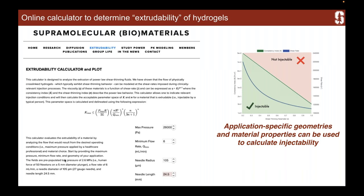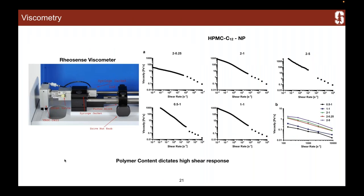Once we realized that this high-shear data was really key to designing our materials, that's when we found out about RayoSense. We got an M-VROC viscometer in our lab, and I did a series of measurements with different HPMC-C12 nanoparticle PNP hydrogels. We reinforced what Hector saw — really the polymer content is what dictates this high-shear response. Plotting them all on the same graph, 0.5-1 is the lowest, then 1-1, and all the two-polymer formulations really overlap. This showed us that reducing the amount of polymer may make our material more injectable.